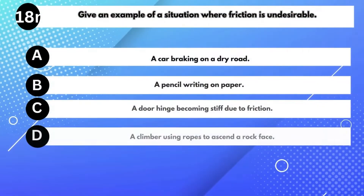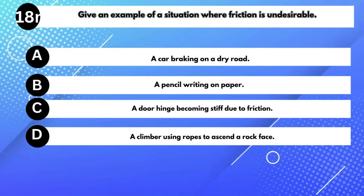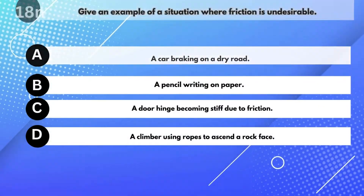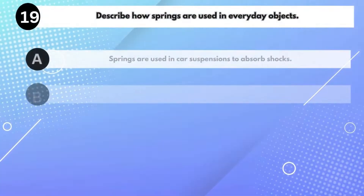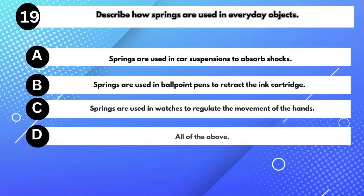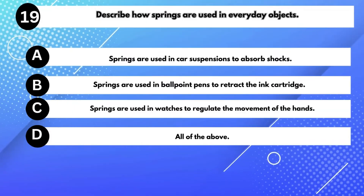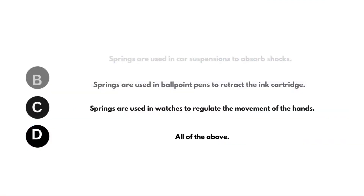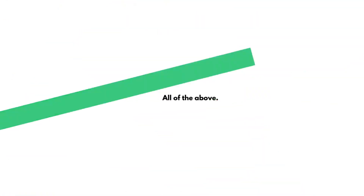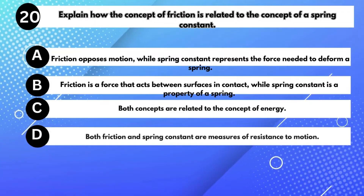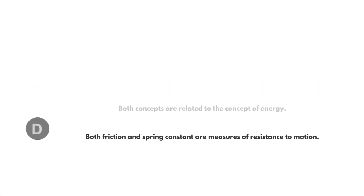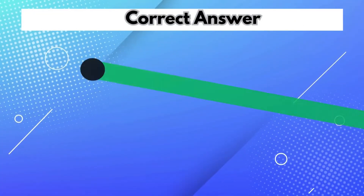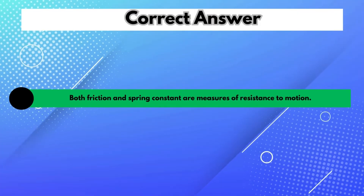Give an example of a situation where friction is undesirable. Answer C: A door hinge becoming stiff due to friction. Describe how springs are used in everyday objects. Answer D: All of the above. Explain how the concept of friction is related to the concept of a spring constant. Answer D: Both friction and spring constant are measures of resistance to motion.